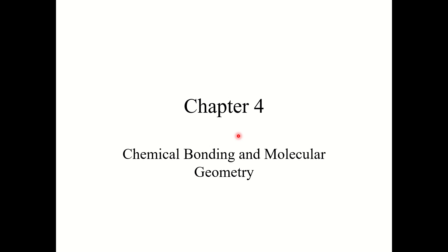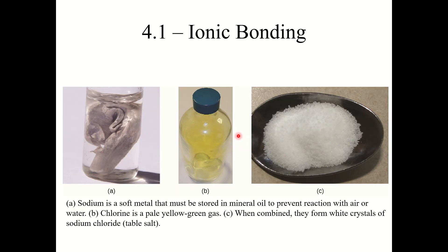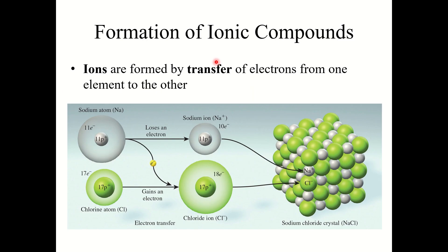Chapter 4: Chemical Bonding and Molecular Geometry. We'll begin with Section 4.1, ionic bonding. So we touched on ionic bonding a little bit at the end of Chapter 3. Ionic compounds are formed by ions, which are formed by the transfer of electrons from one element to the other. With that example we looked at at the end of Chapter 3: sodium chloride.